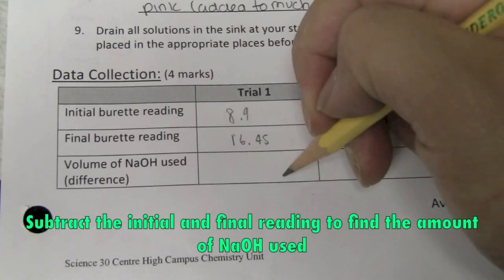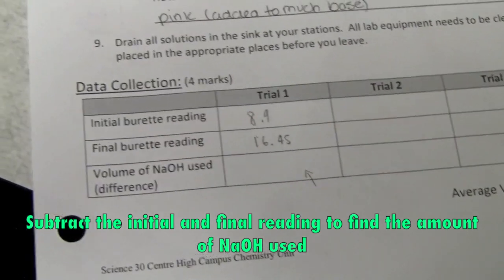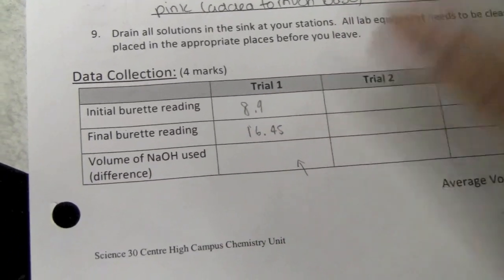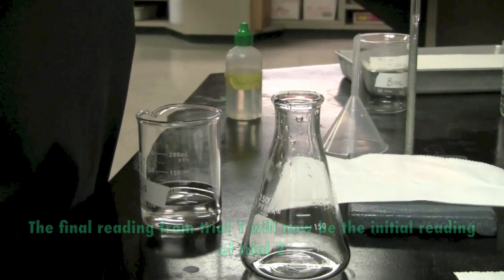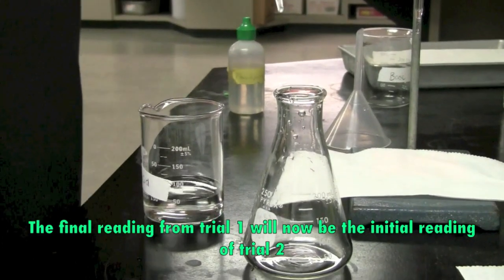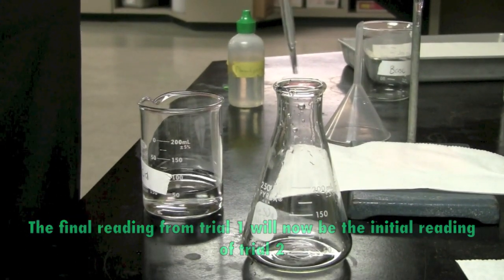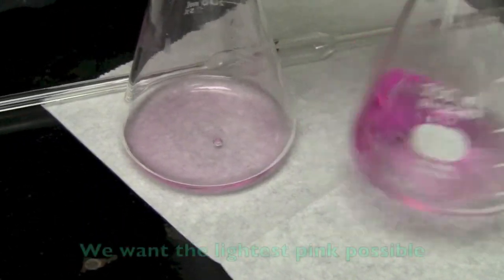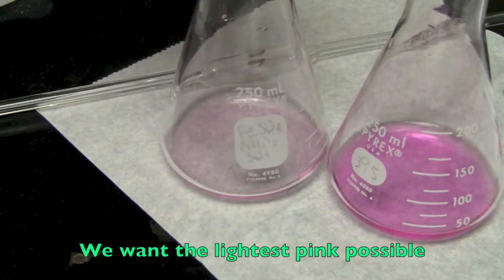And we're going to calculate the volume of NaOH used by subtracting the two. We can just use 16.45 as our initial burette recording for trial two. So compared to the other one, we can definitely see the difference between the two.